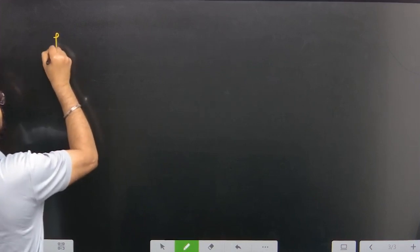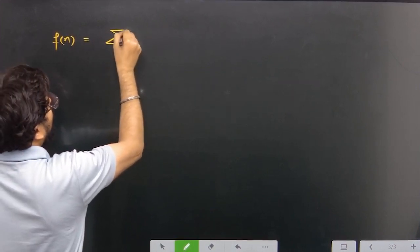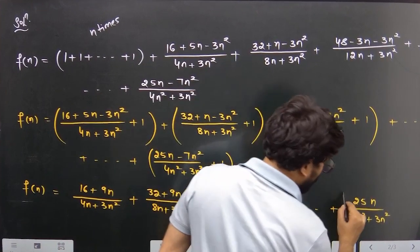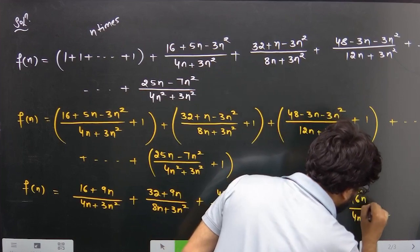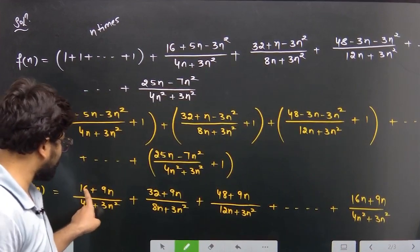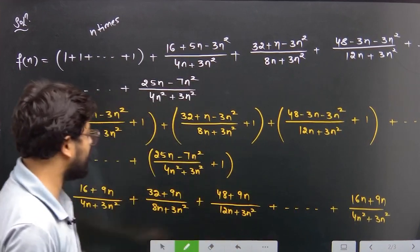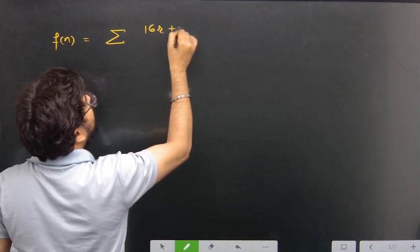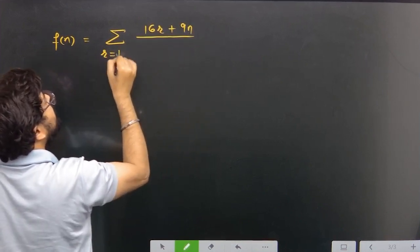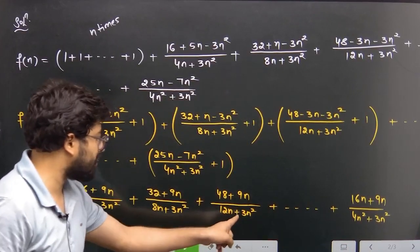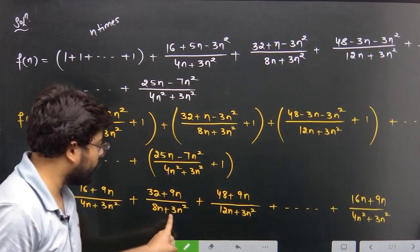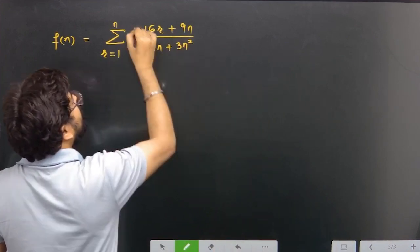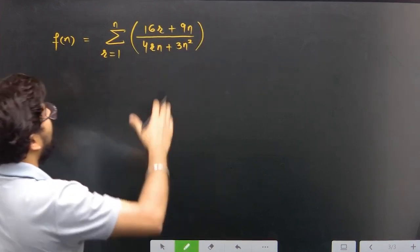f(n) is equal to sigma notation. Looking carefully, the numerator repeatedly has 9n. We can write 25n as 16n + 9n. The number of terms goes 16·1, 16·2, 16·3, ..., 16·n, so the numerator becomes (16r + 9n). The denominator has 3n² and 4·r·n, giving 4rn + 3n².